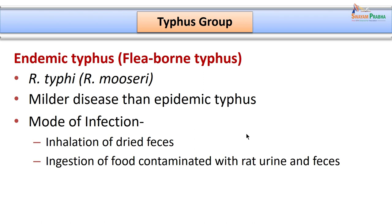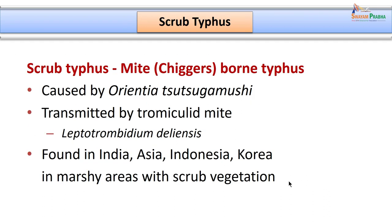In endemic typhus the transmitting vector is the flea and the causative organism is Rickettsia typhi or Rickettsia mooseri. The disease is much milder compared to epidemic typhus. The mode of infection is either by inhalation of dried feces or by ingestion of food contaminated by rat feces or rat urine. So far we have discussed in detail the clinical features of spotted fever group, epidemic typhus and endemic typhus.